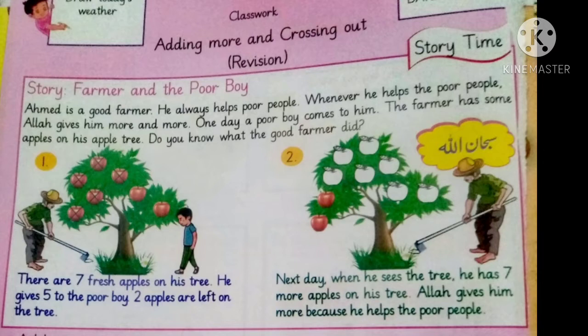Ahmed is a good farmer. He always helps poor people. Whenever he helps the poor people, Allah gives him more and more. One day a poor boy comes to him. The farmer has some apples in his apple tree. Do you know what the good farmer did?